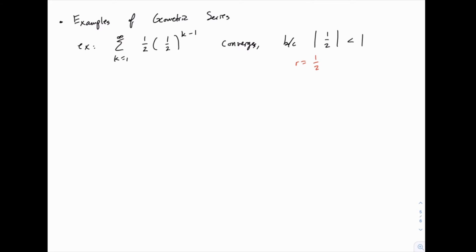And in fact we can tell what it converges to. This converges to a over 1 minus r. a in this case is 1 half, r is also 1 half, so you have 1 half divided by 1 half, which equals 1.